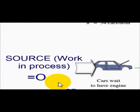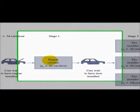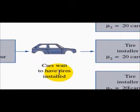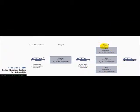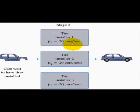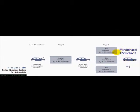Cars are supplied at a rate of 54 cars per hour, then stored in a buffer where they wait until the engine is installed. In the next process, the engine is installed at a rate of 60 cars per hour, then the car proceeds to the next buffer where cars wait to have tires installed. In stage 2, three operators install tires at a rate of 20 cars per hour, and the finished product is sent to the final output buffer.